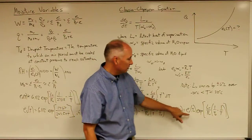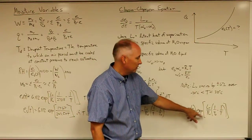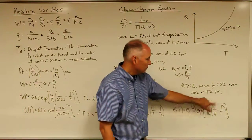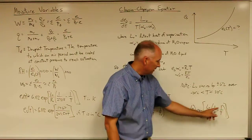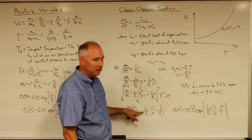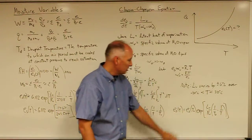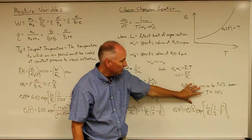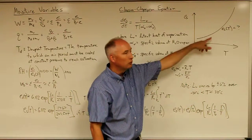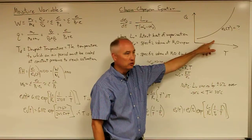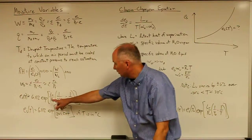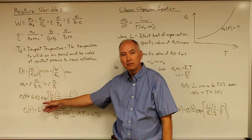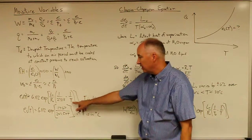These terms appear in different order than before because we distributed the minus sign inside the exponential. This equation, which comes from the Clausius-Clapeyron equation, has a significant inaccuracy built into it, but it gives you the functional form for how the water vapor pressure changes with temperature. That is reflected here as the Clausius-Clapeyron equation translated into the saturation vapor pressure as a function of temperature, where temperature is in degrees Kelvin.